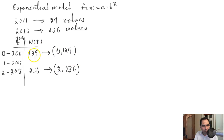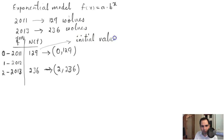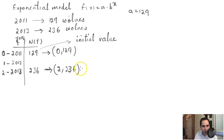This first point becomes your initial value, because you started counting at t = 0. So a = 129. Now that you have a, you just need to figure out what b is, using the point (2, 236).